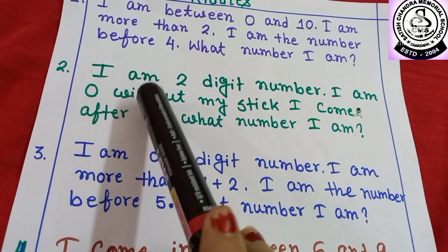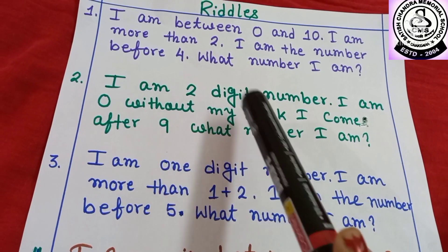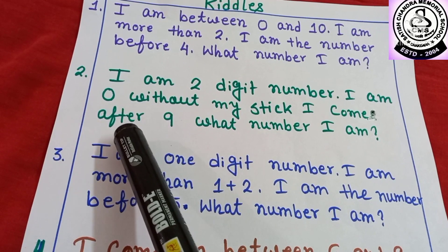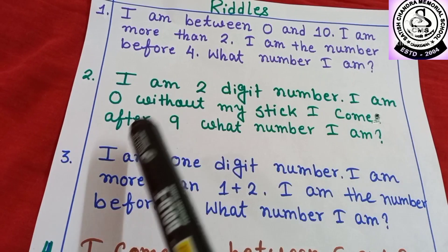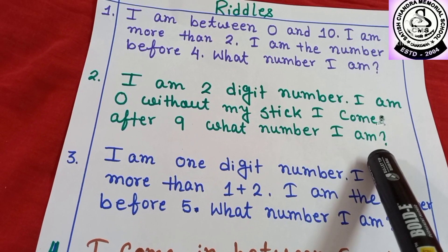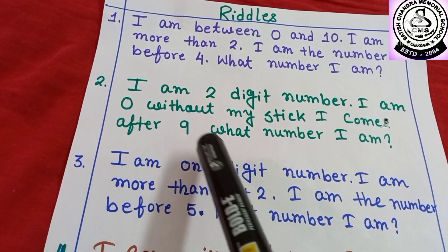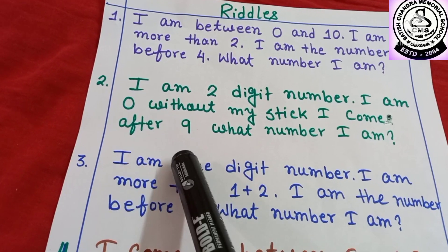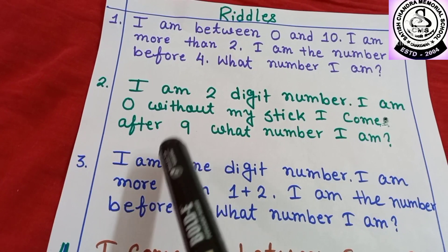Number 2. I am a 2-digit number. I come after 9. So, what number am I? Can you tell me? What comes after 9? Yes! 10. After 9, what comes? 10.